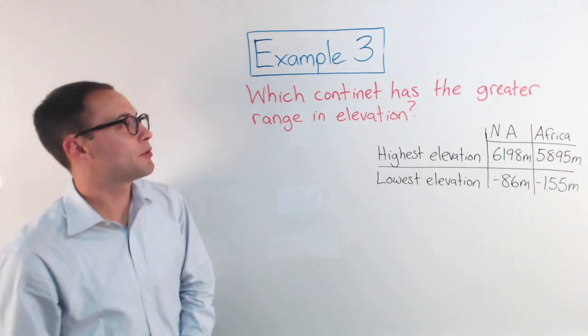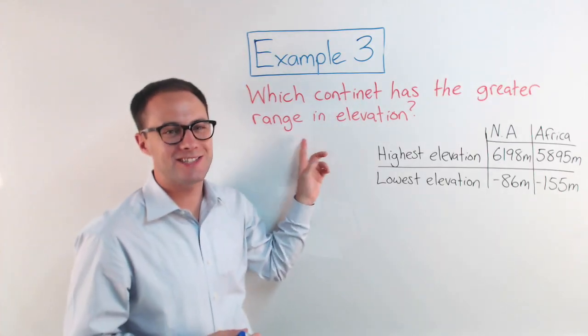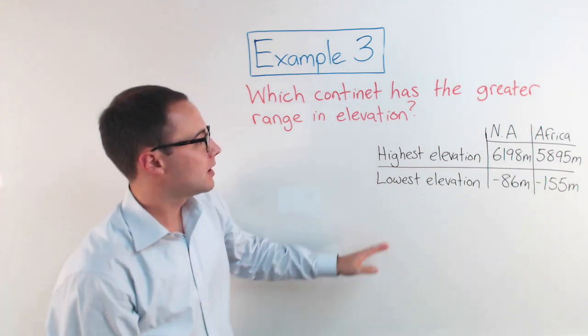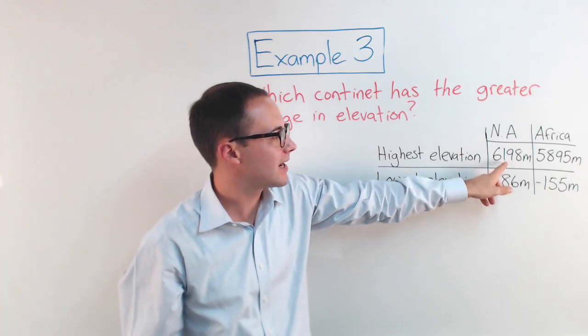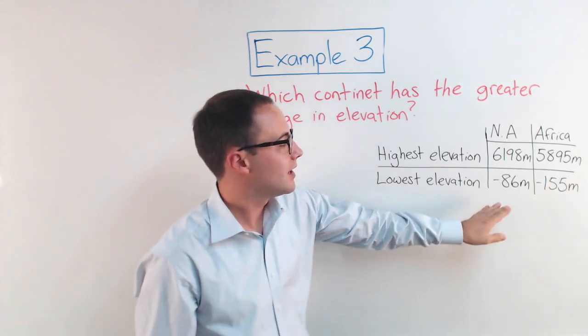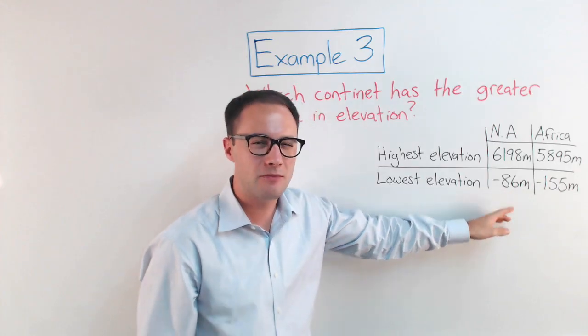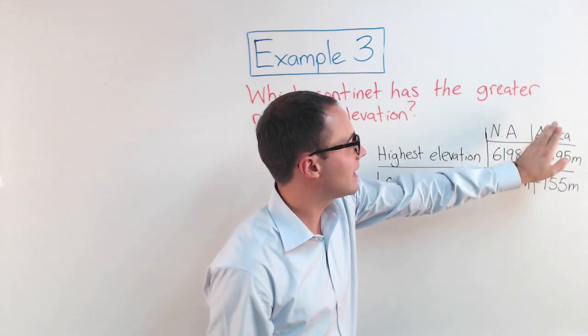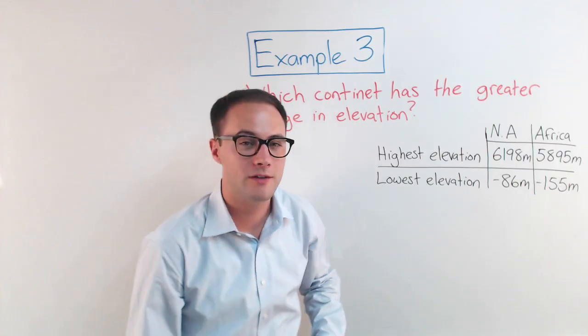Here's our last example problem. We got a word problem. Which continent has the greater range in elevation? So, from the very tip top to the very lowest point. So, we've got North America and Africa. The highest elevation in North America is 6,198 meters. That's Mount McKinley in Alaska. The lowest elevation is Death Valley in California at negative 86 meters. It's negative because it's actually below sea level. In Africa, the highest elevation 5,895 meters and the lowest negative 155 meters.